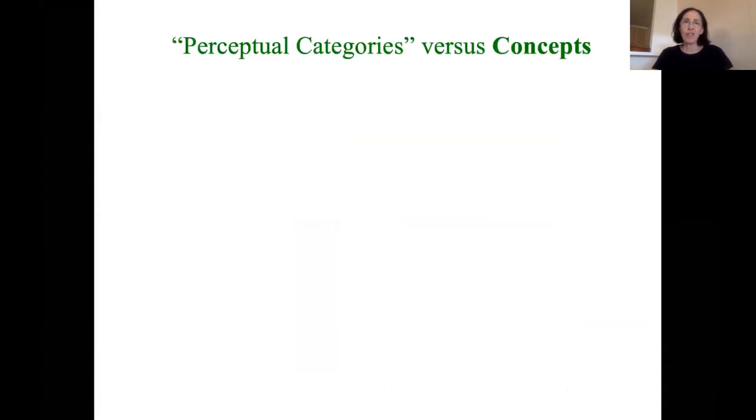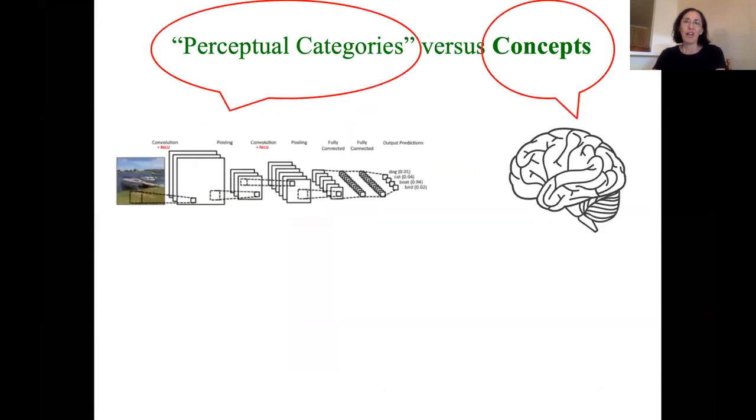There's this notion of perceptual categories versus concepts. It seems that neural networks, when they're trained on these images, millions of images from the ImageNet set, are really learning what we would call perceptual categories, which are very different than what we call concepts, which is what the human mind is able to learn from its experience.